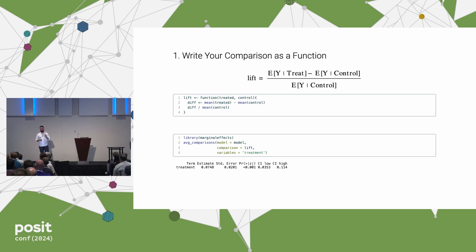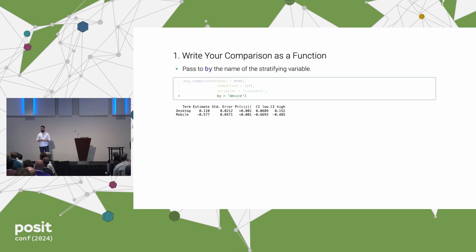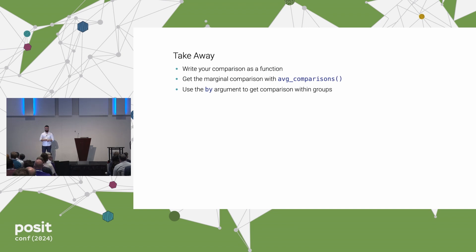I told my colleague: I know your PM said they wanted the lift, but they don't want one number — they want two numbers. They want the lift for each device type. To do that, you can use the 'by' argument. Simply pass the name of the variable in your model for which you'd like to compute this comparison within levels. Now we can see that desktop users have a lift of about 11% — with confidence intervals and standard errors — and mobile users have a lift of minus 58%. So this experiment was not very good for mobile users.